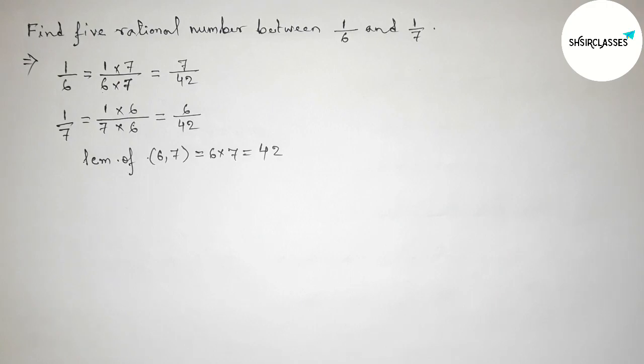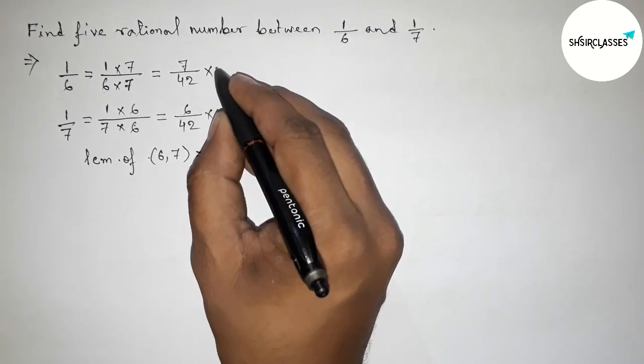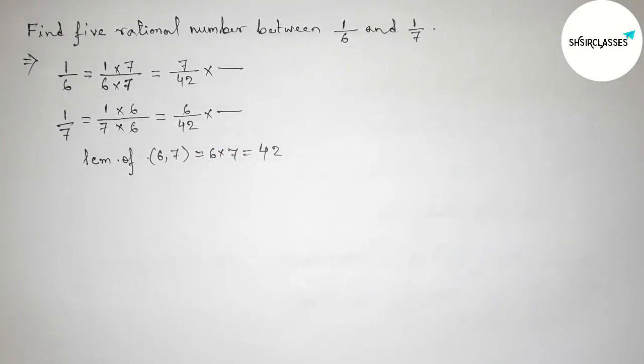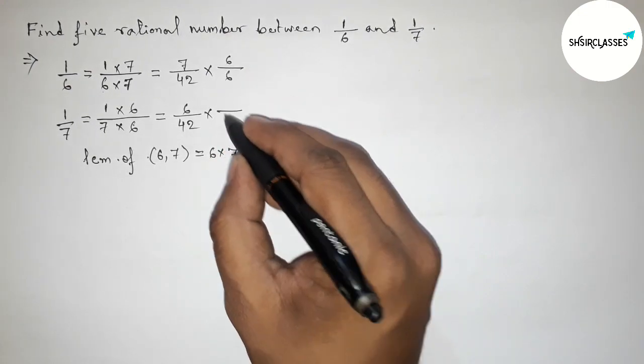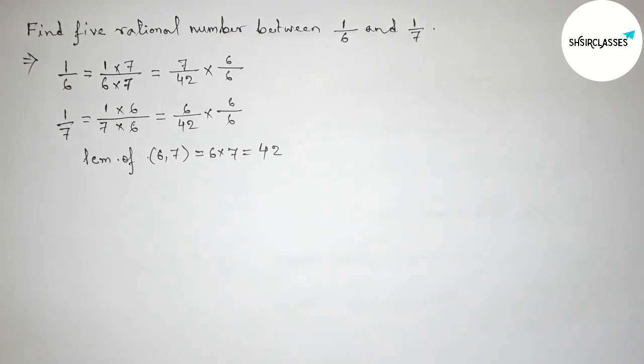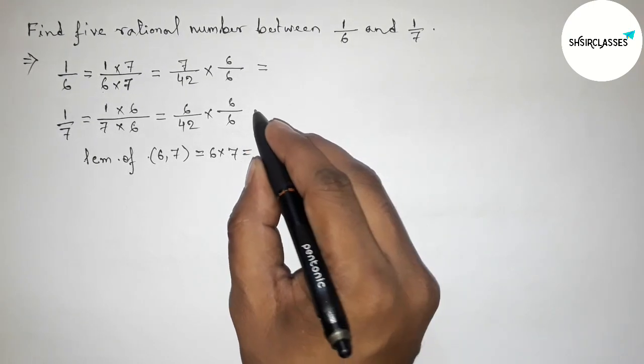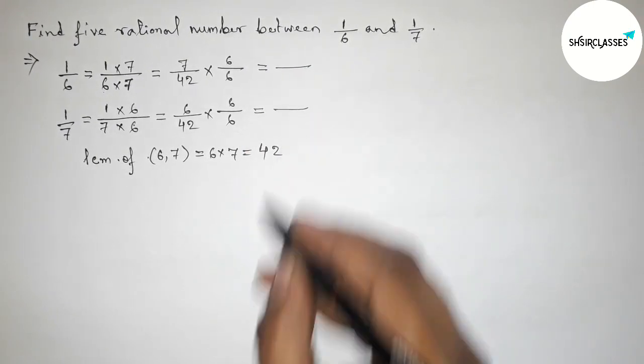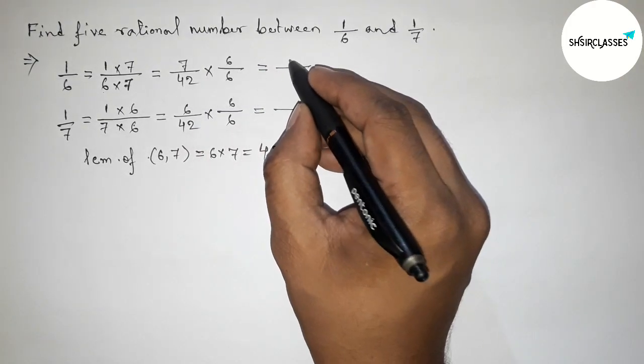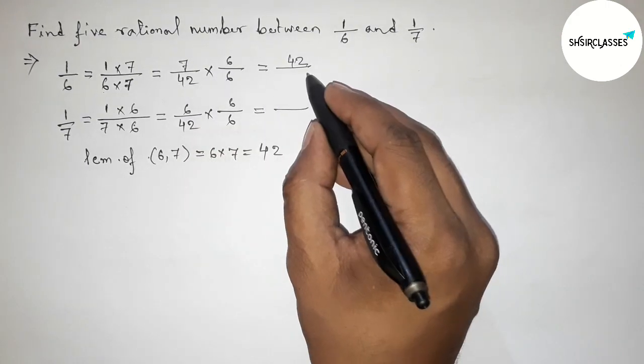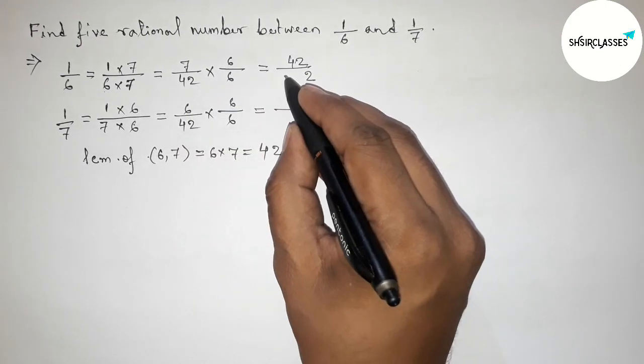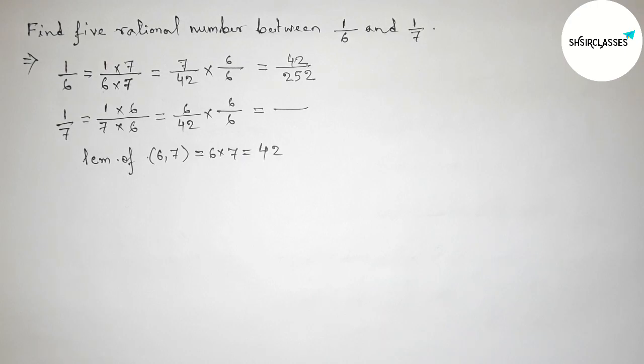Now both denominators are equal. Next, to find 5 rational numbers, we multiply both rational numbers by 6 up and down. This gives us 6 × 7 = 42, so 42/252, and 6 × 6 = 36, so 36/252.